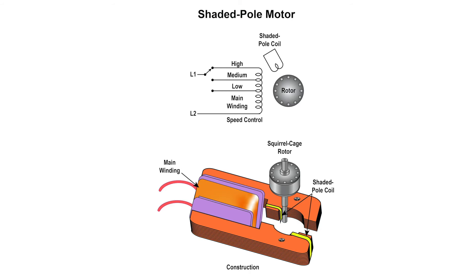The auxiliary winding, which is composed of a copper ring, is called a shading coil. The current in this coil delays the magnetic flux in that part of the pole in order to provide a rotating magnetic field.